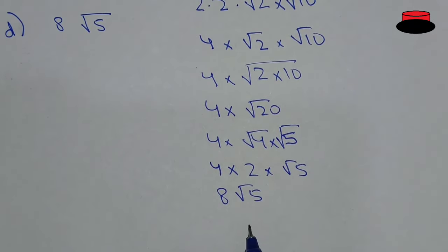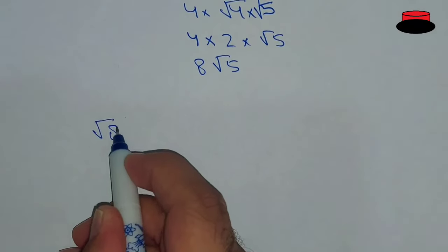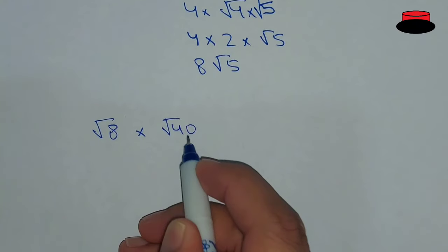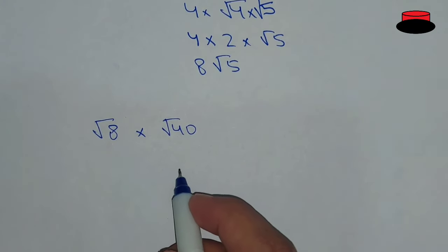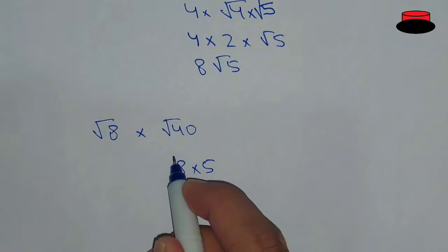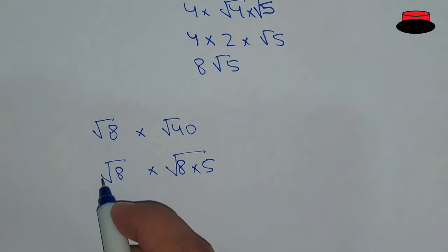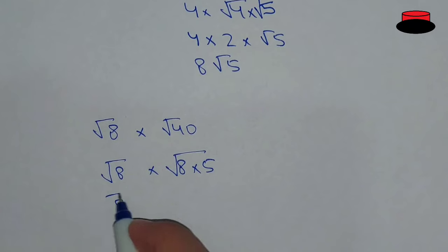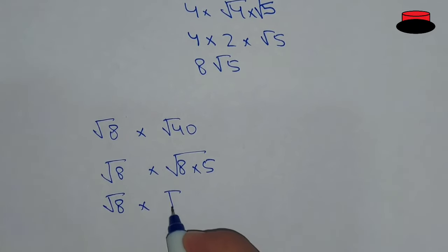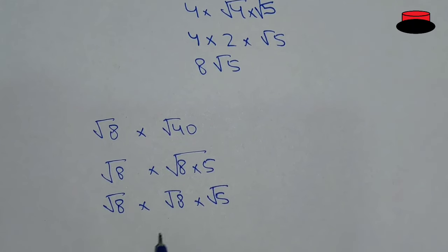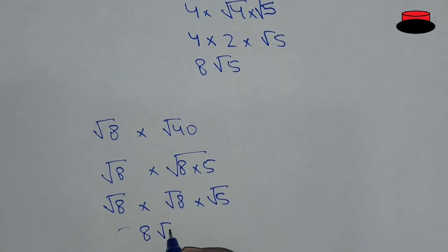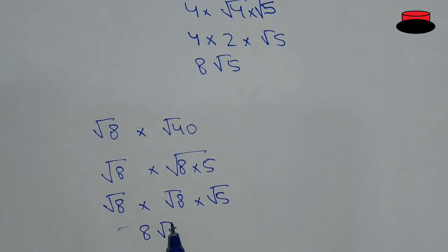So, D is the right option. But we also want to find the easiest solution. Another way is: under root 8 multiply by under root 40, where under root 40 can be written as under root 8 into 5. So we have under root 8 multiply by under root 8 multiply by under root 5. We know that under root 8 multiplied by under root 8 is equal to 8. So, 8 under root 5. This is the shortcut — the easiest way to solve this question.